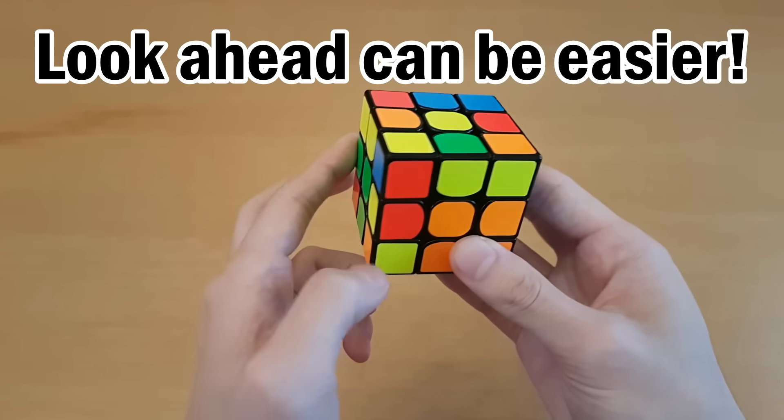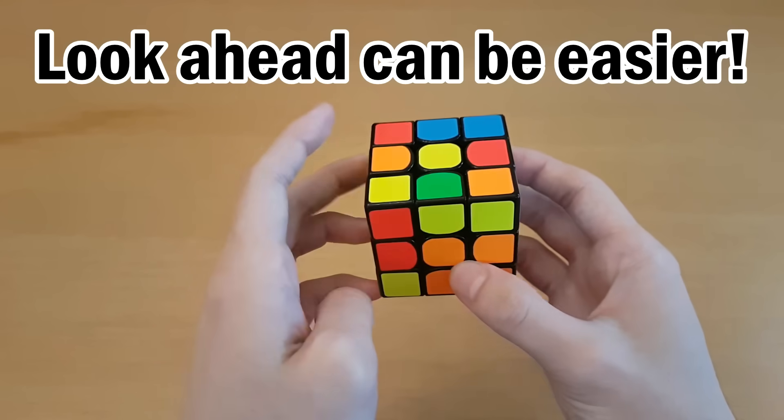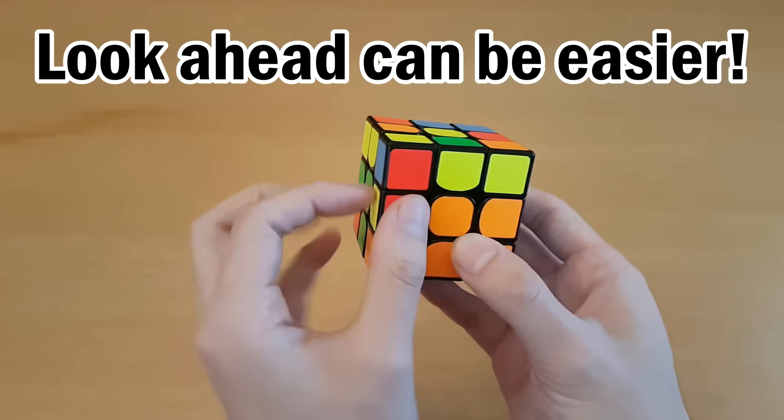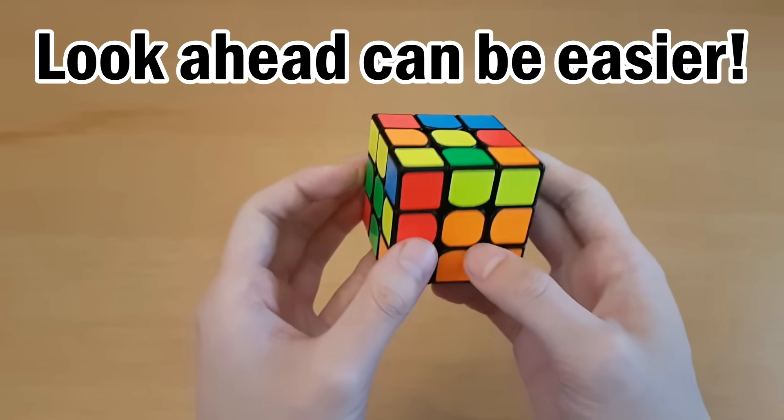And if you have two solved back slots, then you never have to look there again. So once you find the corner, you know its edge has to be either in the top layer or the front two slots, and that makes looking for it far easier.